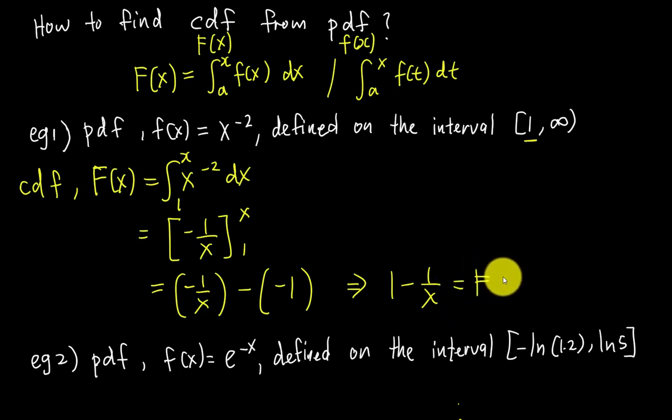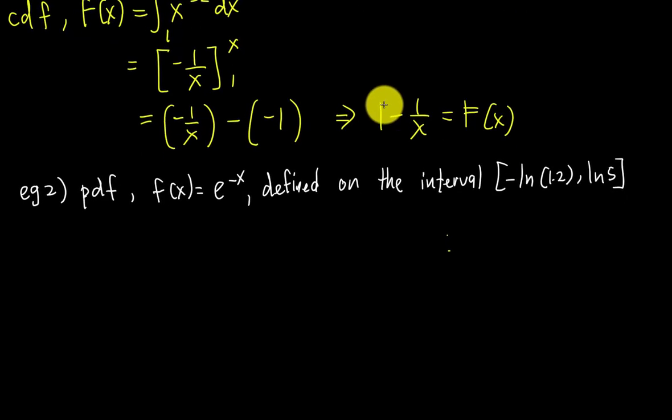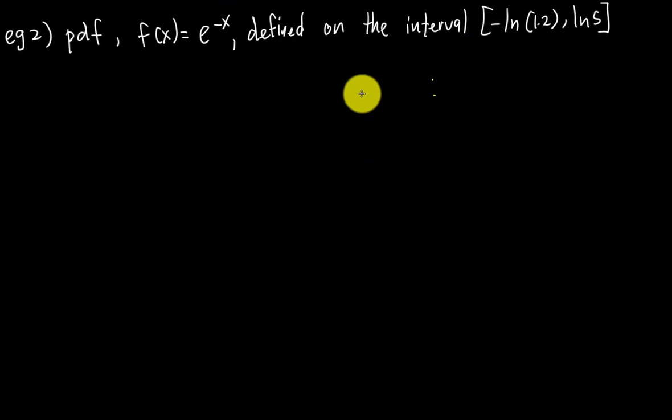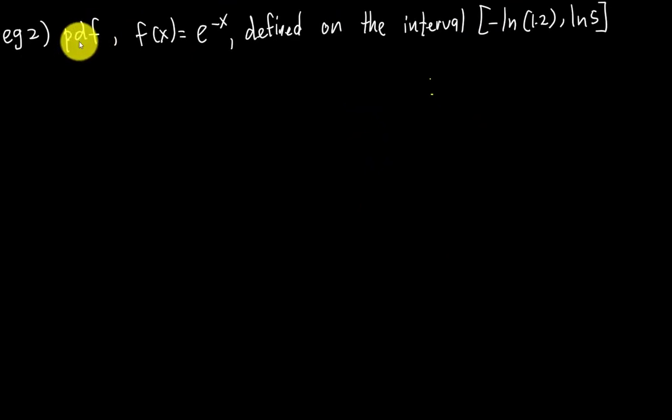Here the PDF is e^(-x) defined on the interval from -ln(1.2) to ln(5). Remember, the first value is always my 'a' value. If I integrate from -ln(1.2) to ln(5), I would get 1, but that's not what I want.